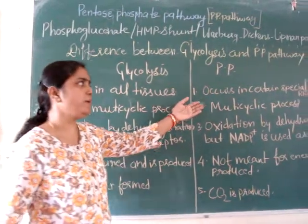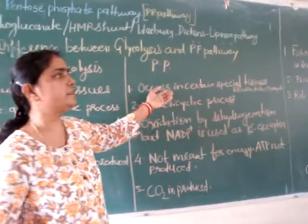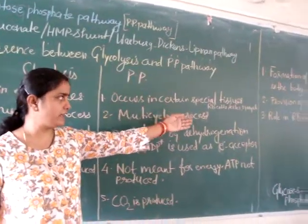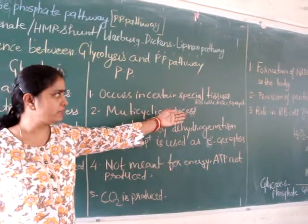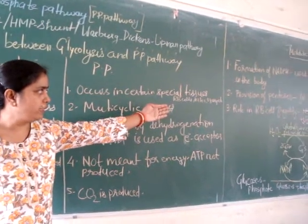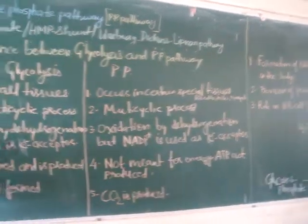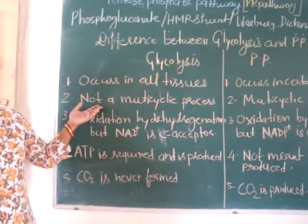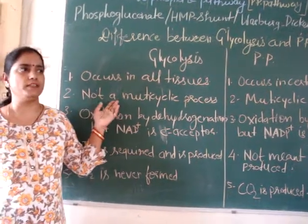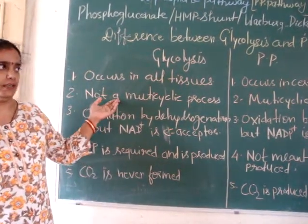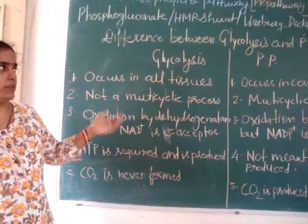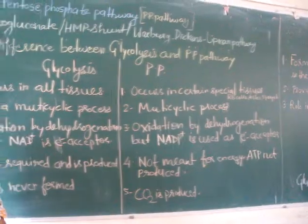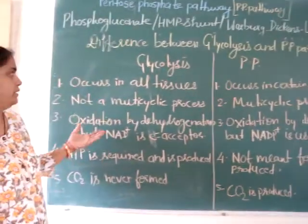Whereas the PP pathway occurs in certain special tissues like red blood cells, testes, ovary, etc. Then, glycolysis pathway is not a multi-cyclic process — it is a linear pathway. Whereas the PP pathway is a multi-cyclic process.